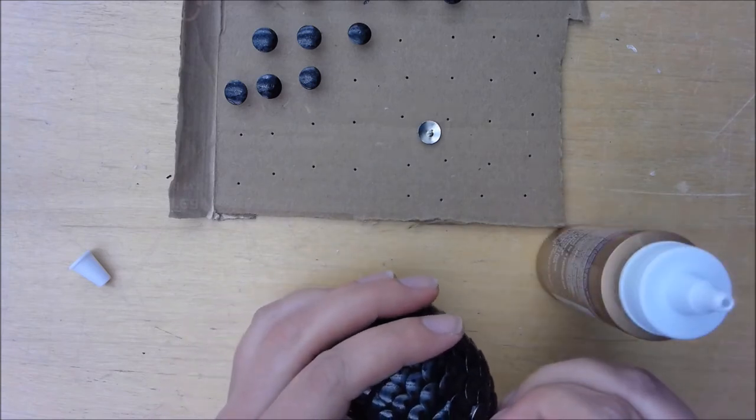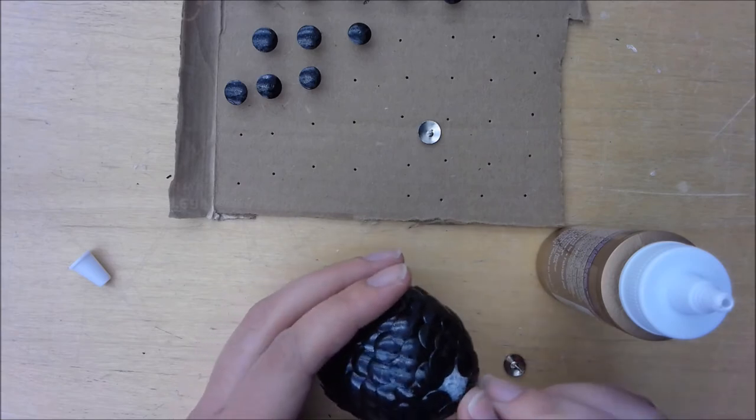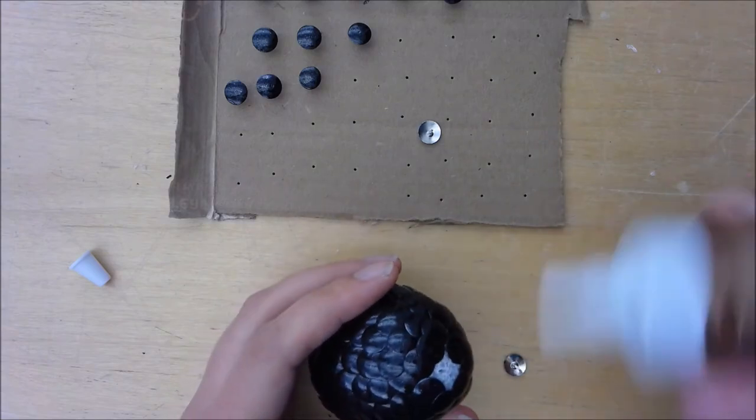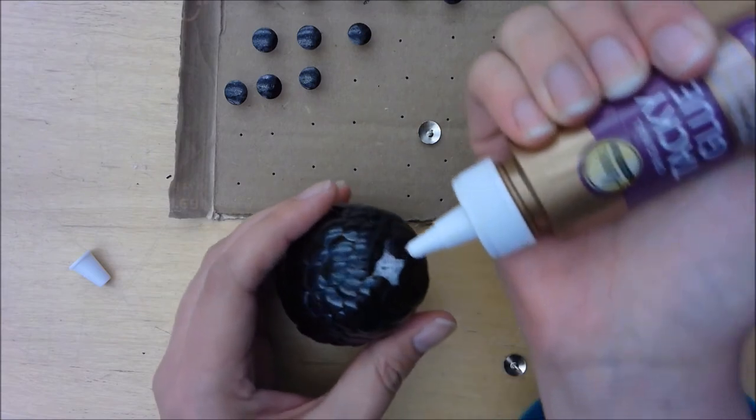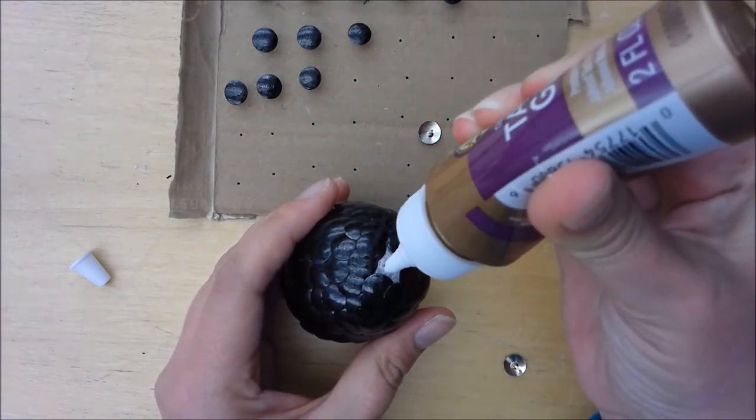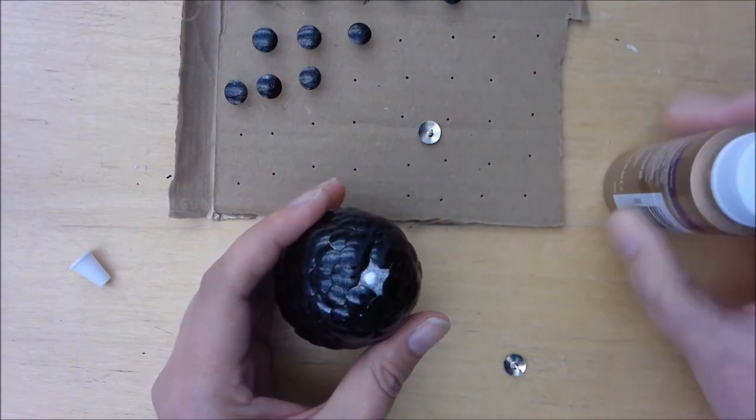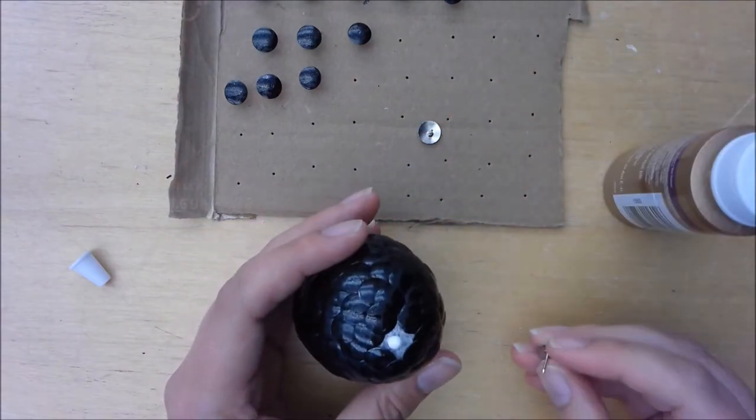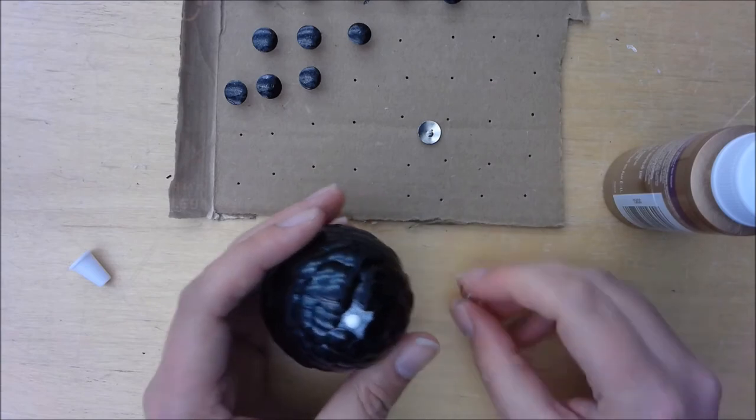So I removed the top of my egg and added the tacky glue, which is sometimes really hard to get out. Come on. There we go. And then added my final thumbtack to the top.